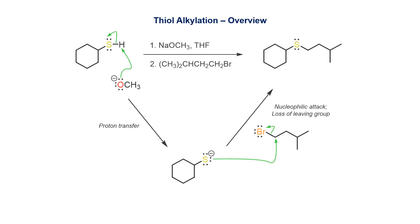The conversion begins with a fast proton transfer to give a thiolate anion. This then serves as a nucleophile and reacts with an added electrophile through the SN2 pathway. The result is a sulfide, which is the sulfur equivalent of an ether.